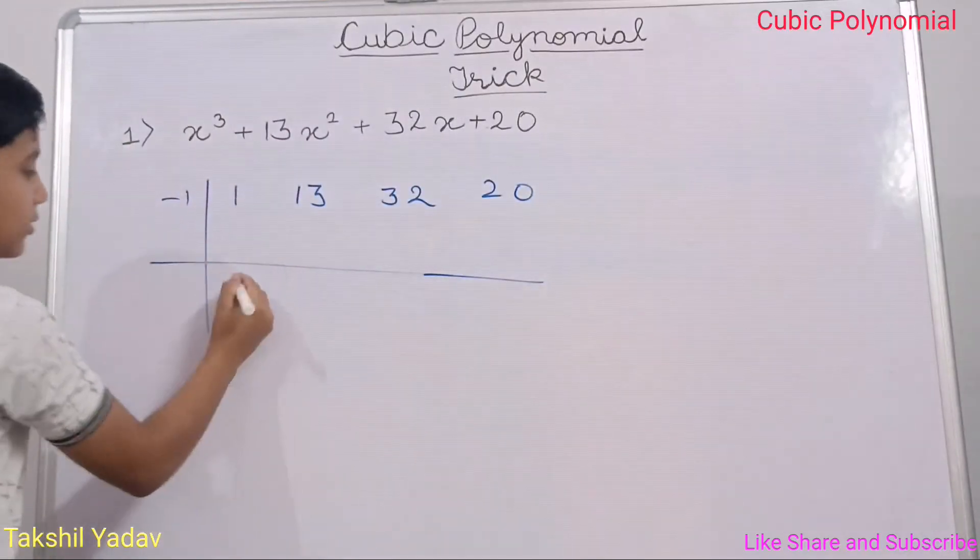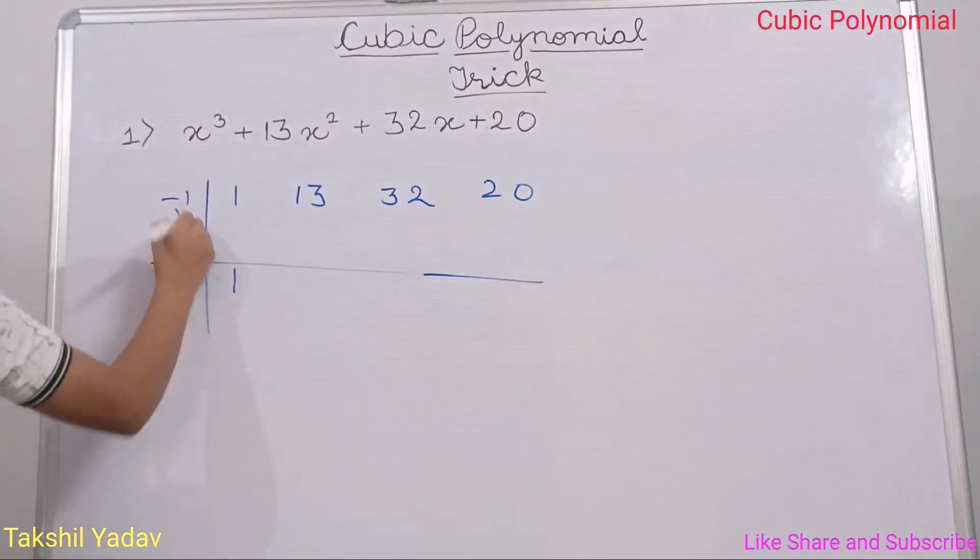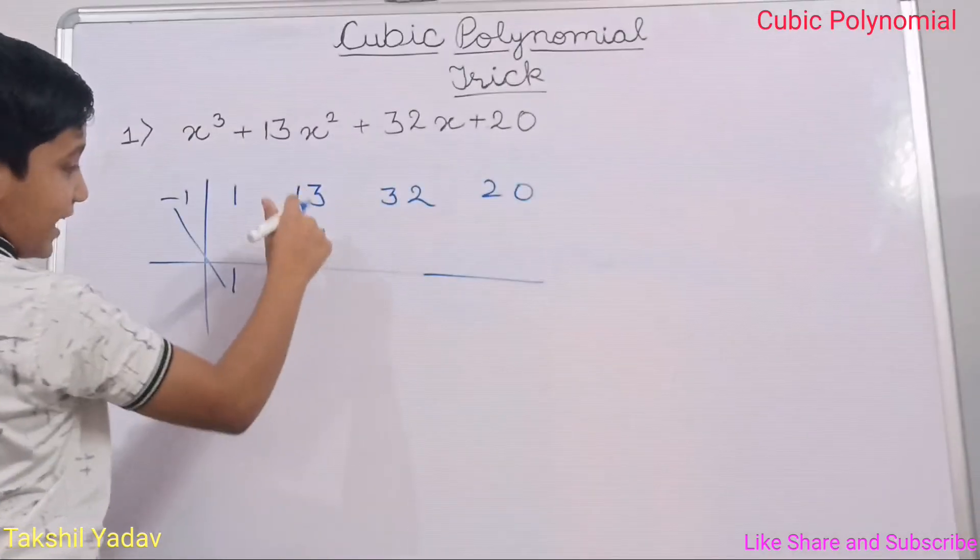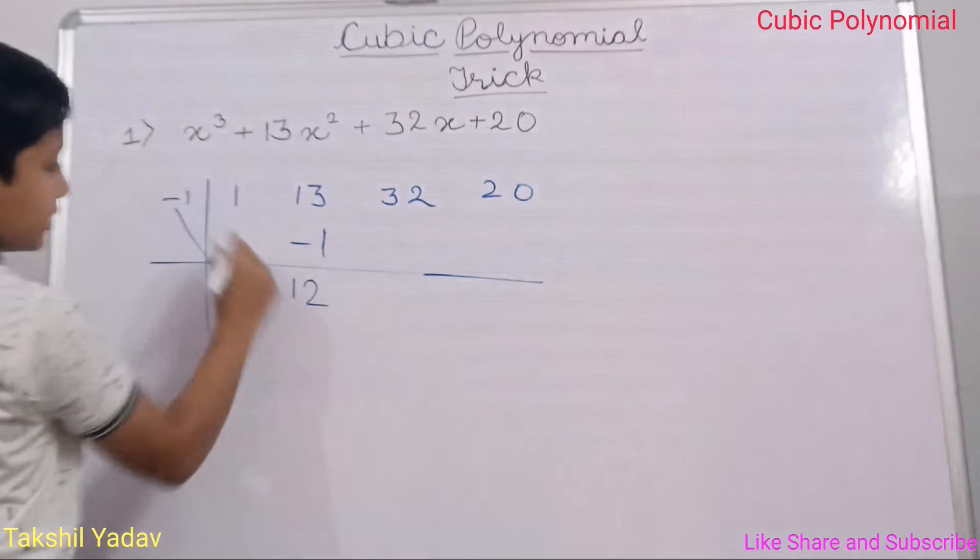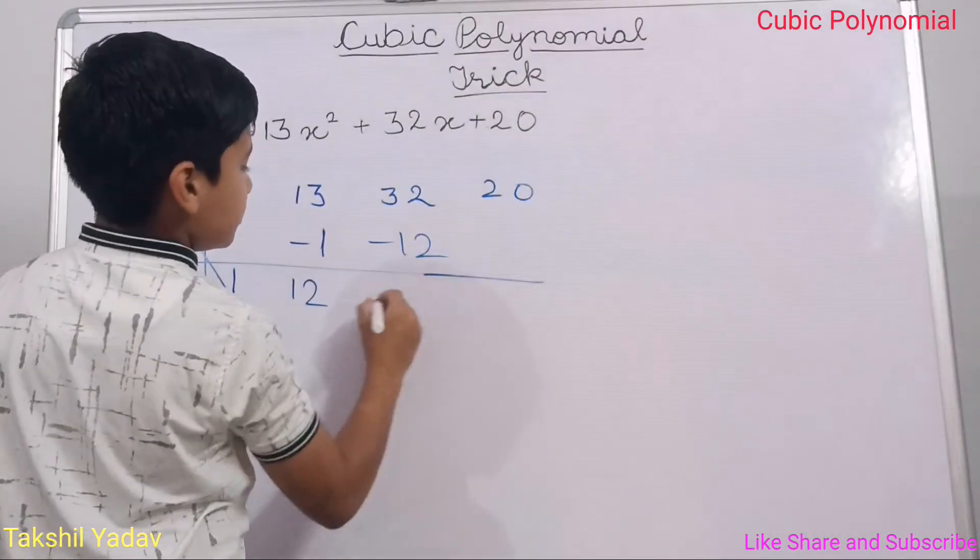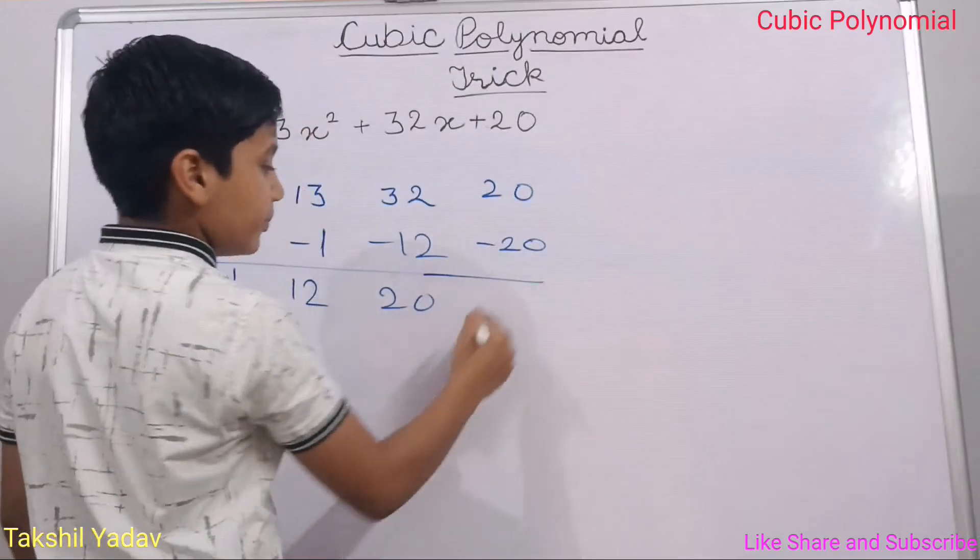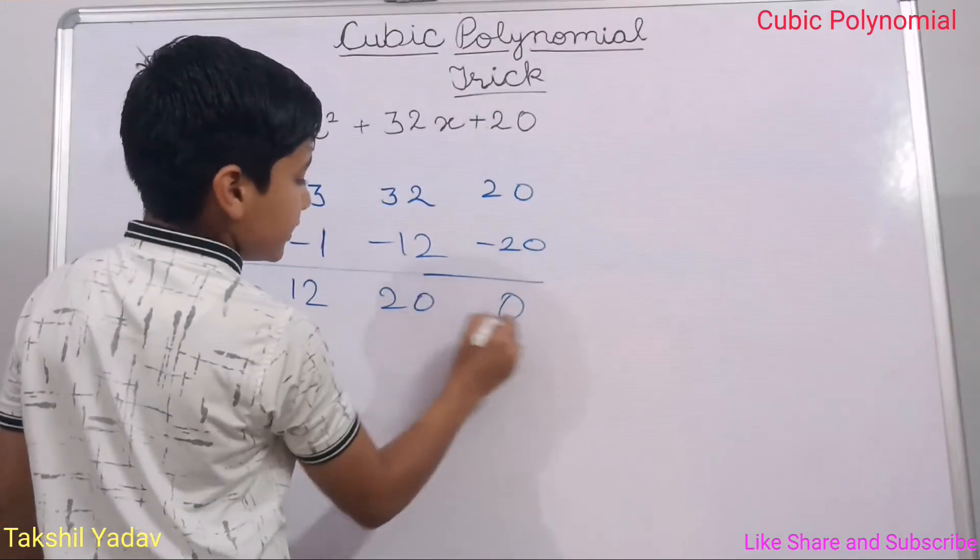Now, bring it down. It is 1. Multiply it. Minus 1 into 1 gives us negative 1. Minus 1, add them, it gives us 12, negative 12, 20, negative 20. So at last, we get 0.